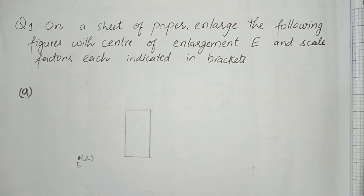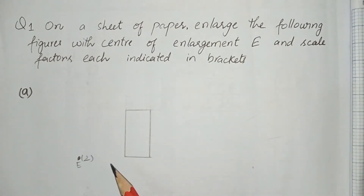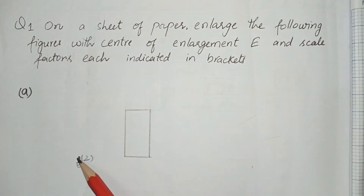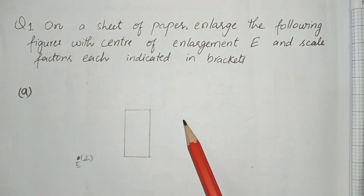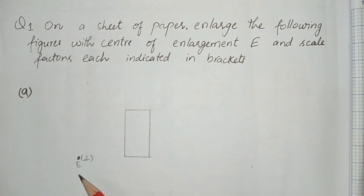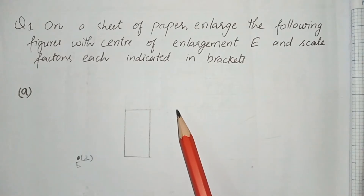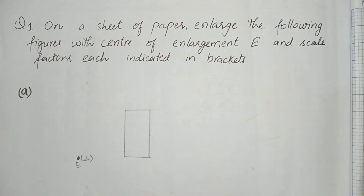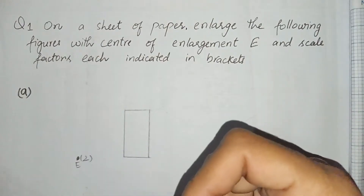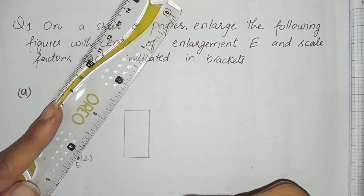Question number 1: on a sheet of paper, enlarge the following figure with the center of enlargement and scale factor each indicated in brackets. We have to enlarge these figures. These are figures provided in question number 1 and there is no scale for these figures — I drew them randomly from the book. Only the center of enlargement is given to us. There is no naming A, B, C, D, so we only have to enlarge these figures.